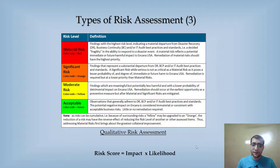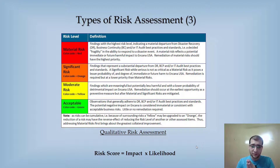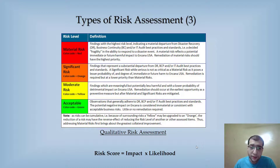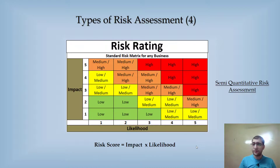The second is qualitative. On the left side we have descriptive metrics — for instance, material risk (which you can call high risk), significant risk, moderate risk, and acceptable risk. Each is defined in a descriptive manner. For example, moderate risk covers findings which are meaningful but potentially less harmful and with lower probability of detrimental impact. All risks are defined descriptively.